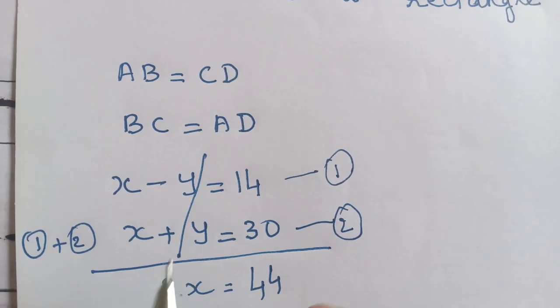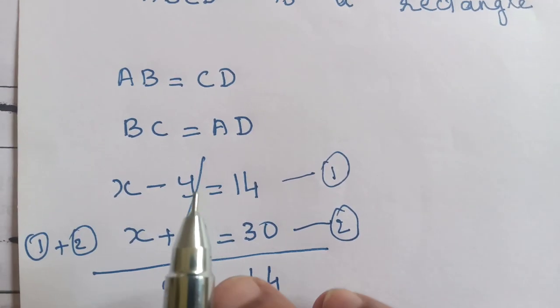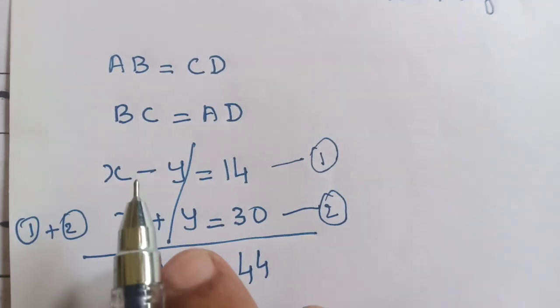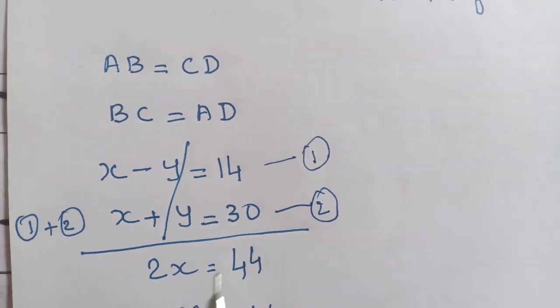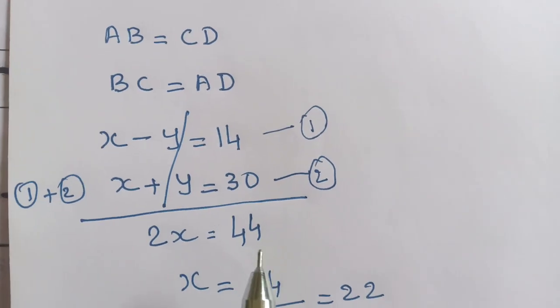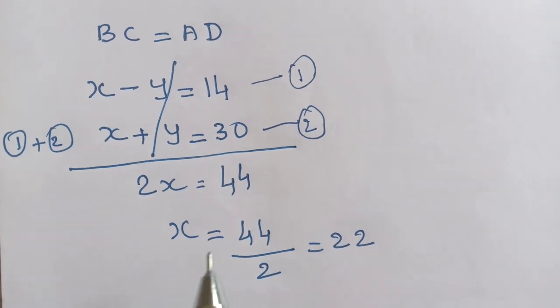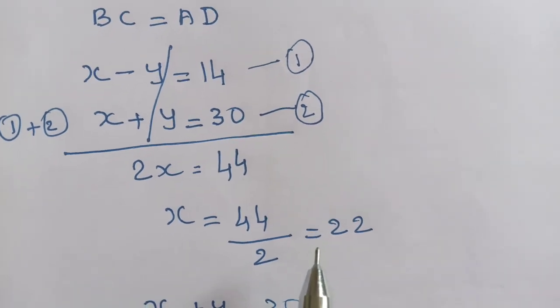The y terms cancel out. Adding the equations: x plus x equals 2x. 14 plus 30 equals 44. So 2x equals 44. x equals 44 divided by 2, which is 22.